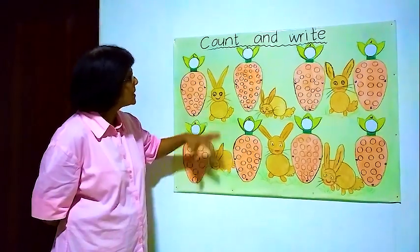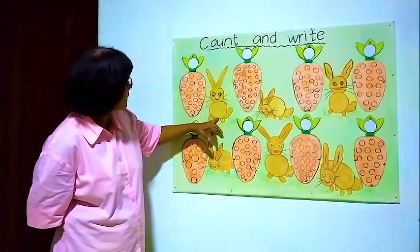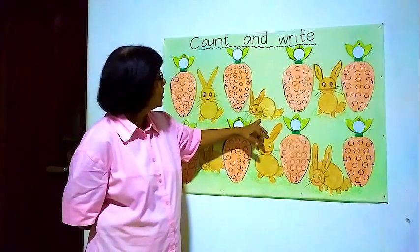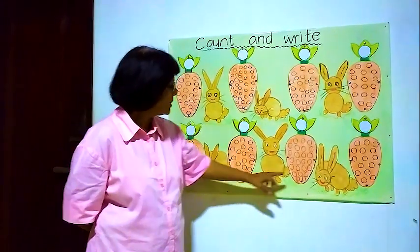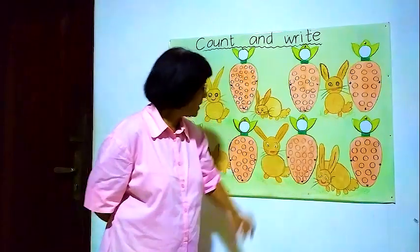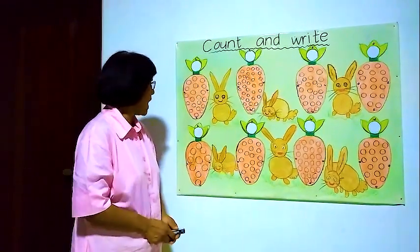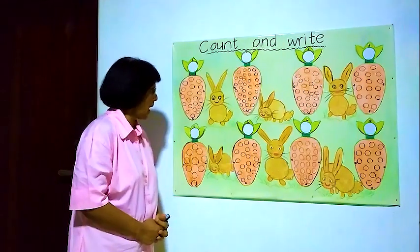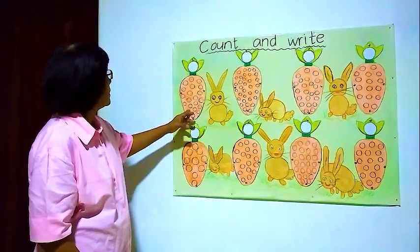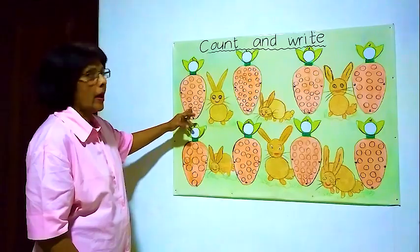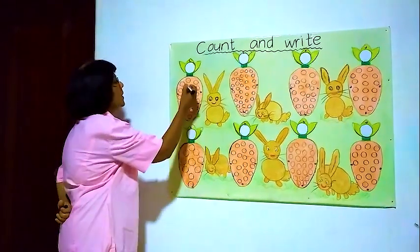Now we will see how many rabbits there are. 1, 2, 3, 4, 5, 6. There are 6 rabbits. Now we will start from the first one. We will see how many balls are inside this carrot. Now first one we will count and see.